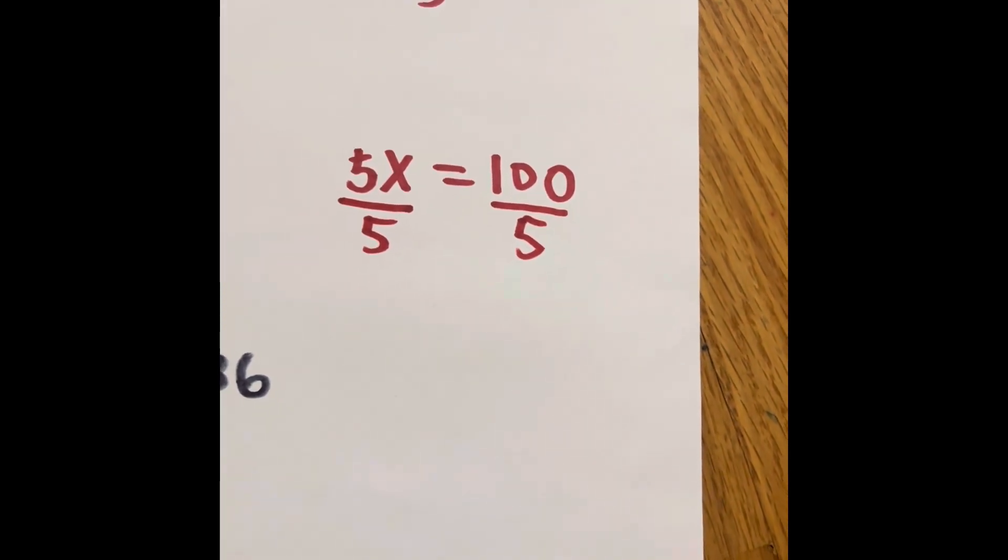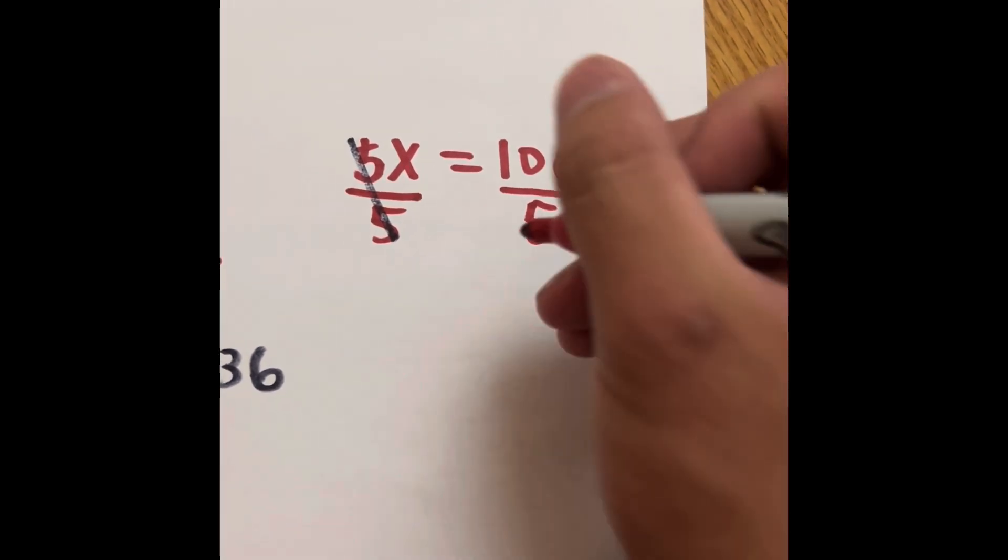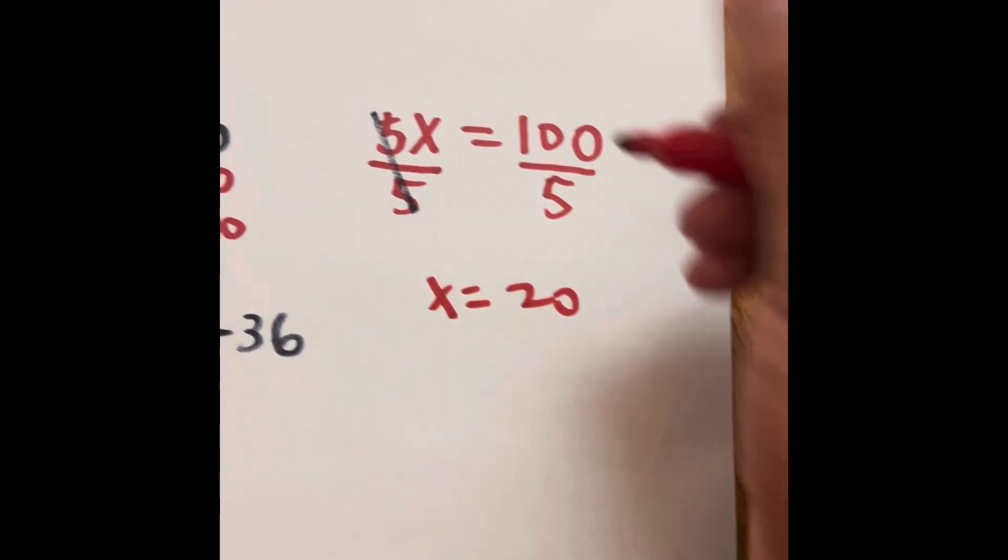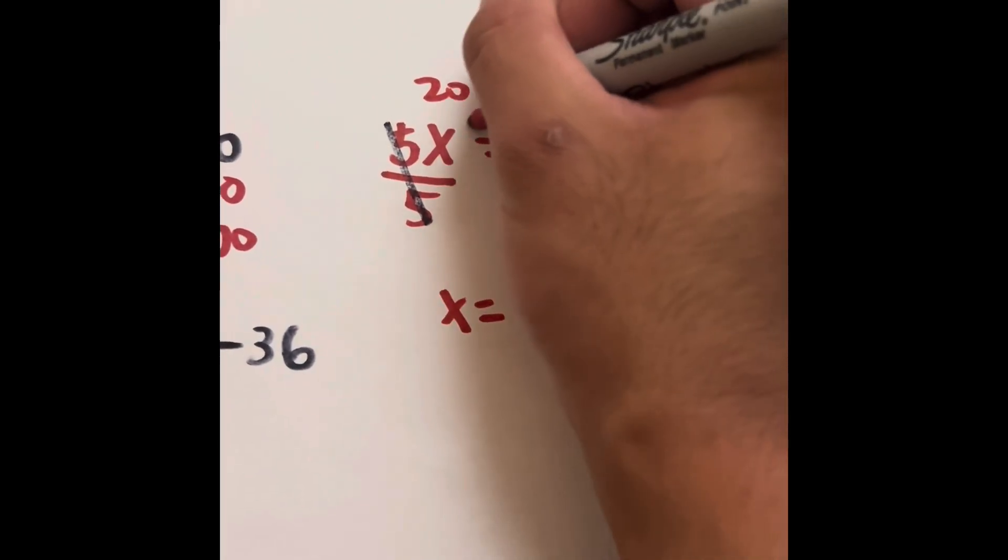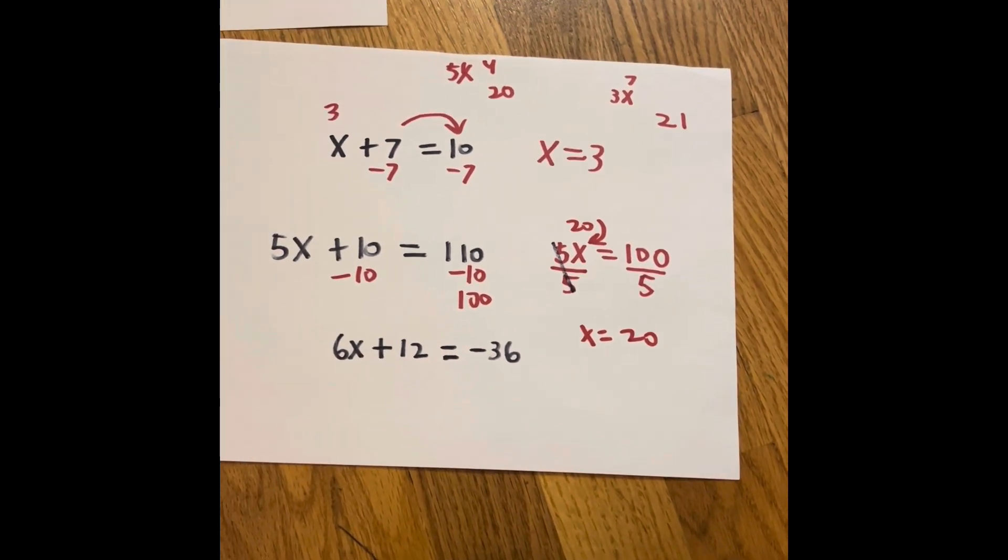These cancel out, and 100 divided by 5 is 20, so x equals 20. If you put 20 in for x, 5 times 20 is 100. That's how we can double-check our answer.